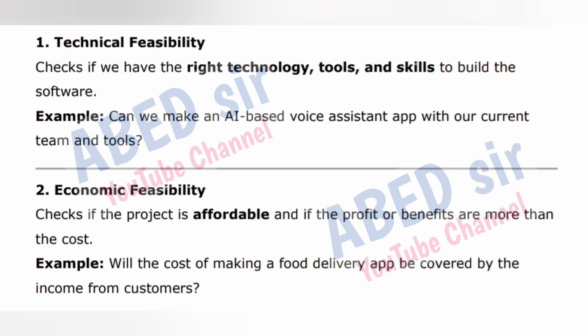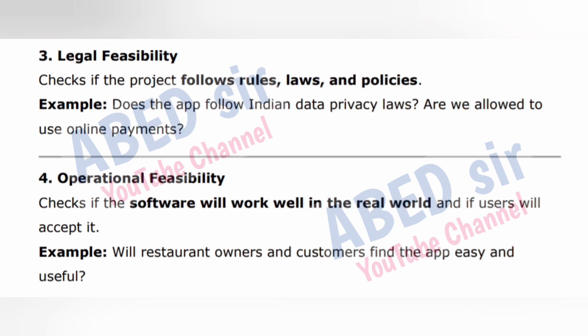Type one: Technical Feasibility. Checks if we have the right technology, tools, and skills to build the software. Example: can we make an AI-based voice assistant app with our current team and tools? Type two: Economic Feasibility. Checks if the project is affordable and if the profit or benefits are more than the cost. Example: will the cost of making a food delivery app be covered by the income from customers?